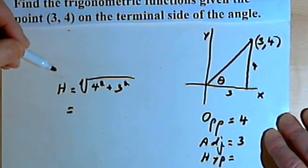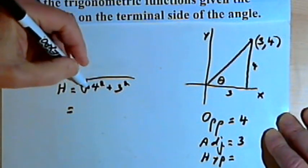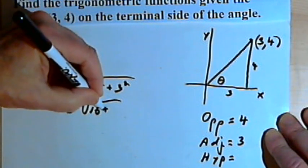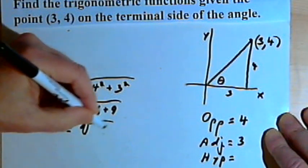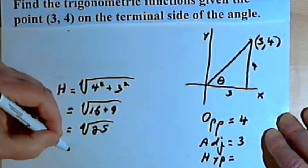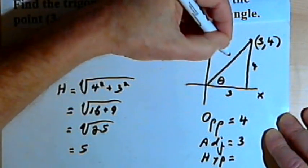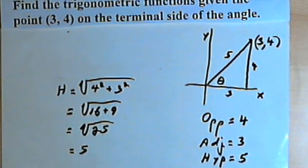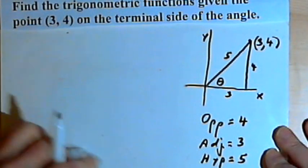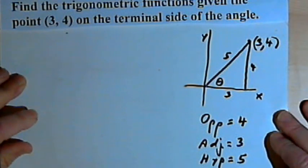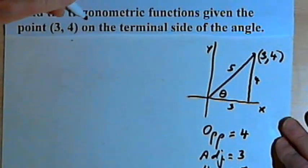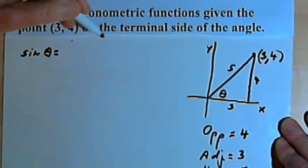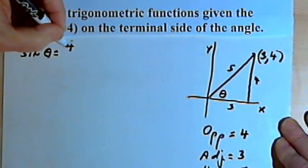This is basically going to be your 3-4-5 right triangle. So 4 squared is 16 and 3 squared is 9, so I've got the square root of 16 plus 9. 16 plus 9 is 25, and the square root of 25 is 5. So now I know that the hypotenuse equals 5. Once I've got the lengths of the two sides and the hypotenuse, I can figure out all the trigonometric function values. The sine of theta is going to equal the opposite over the hypotenuse, or 4 over 5.